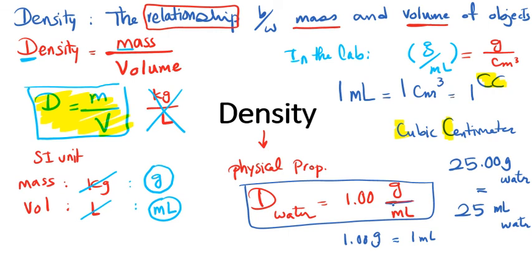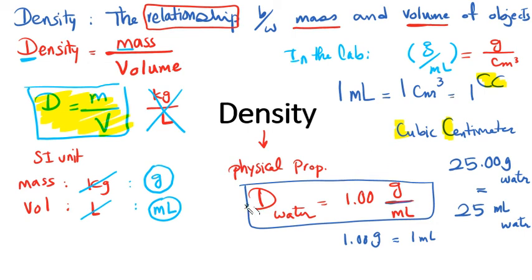If we change the temperature — cooler or warmer — it's going to slightly change the density of water. For example, we might have 0.9998 or 1.001 g/mL. There are very small changes in density with temperature. That is why we prefer to consider the density of water as 1.00 g/mL.